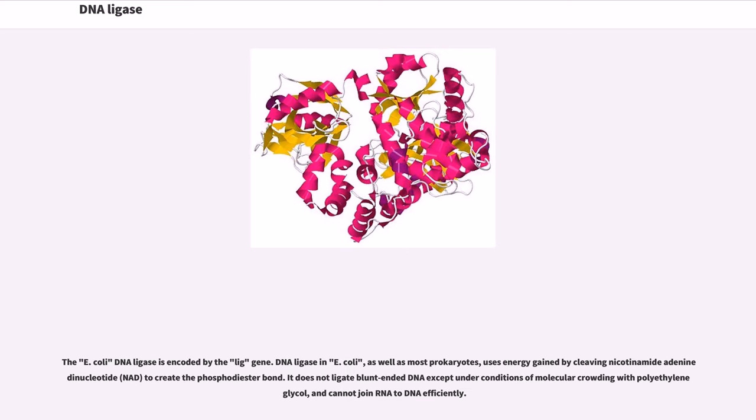The E. coli DNA ligase is encoded by the lig gene. DNA ligase in E. coli, as well as most prokaryotes, uses energy gained by cleaving nicotinamide adenine dinucleotide, NAD, to create the phosphodiester bond.